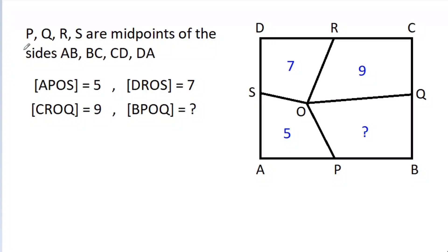In this video, we have given that P, Q, R, S are midpoints of sides AB, BC, CD, and DA respectively. The area of APOS is 5, area of DROS is 7, area of CROQ is 9, and we need to find the area of BPOQ.